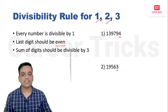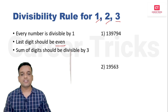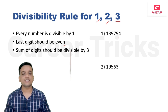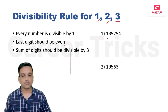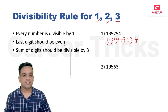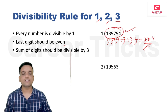Next, divisibility rule for 3: the sum of digits should be divisible by 3. For example, take a six-digit number — we add all six digits: 1 + 3 + 9 + 7 + 9 + 4 = 33. Is 33 divisible by 3? Yes — 3 × 11 = 33. So this number is divisible by 3.